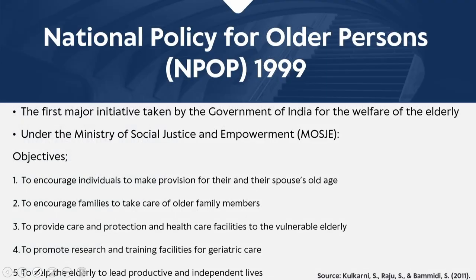We start with NPOP, National Policy for Older Persons, 1999. It is the first major initiative taken by the Government of India for the welfare of the elderly, coming under the Ministry of Social Justice and Empowerment (MOSJE). The key objectives are: to encourage individuals to make provision for their own and their spouse's old age, recognizing that old age is a time period where social support is needed, and family support may not always be there.